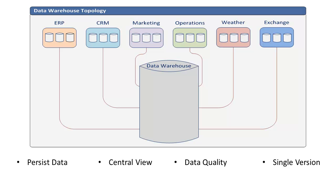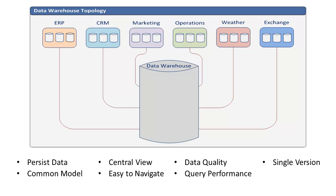We're creating a single version of the truth. Our marketing system may have a list of products, our CRM system has a different list, and our ERP system has yet another list — which creates a real problem when creating reports. In our data warehouse, when we look at sales by product, we have a single product list providing a single version of the truth. The data warehouse is also a common model: it provides an easy-to-navigate model with a business focus, rather than requiring business users to understand each source system's model. Additionally, the data warehouse is designed to provide fast query response, overcoming the performance issues that would arise from querying all source systems simultaneously.